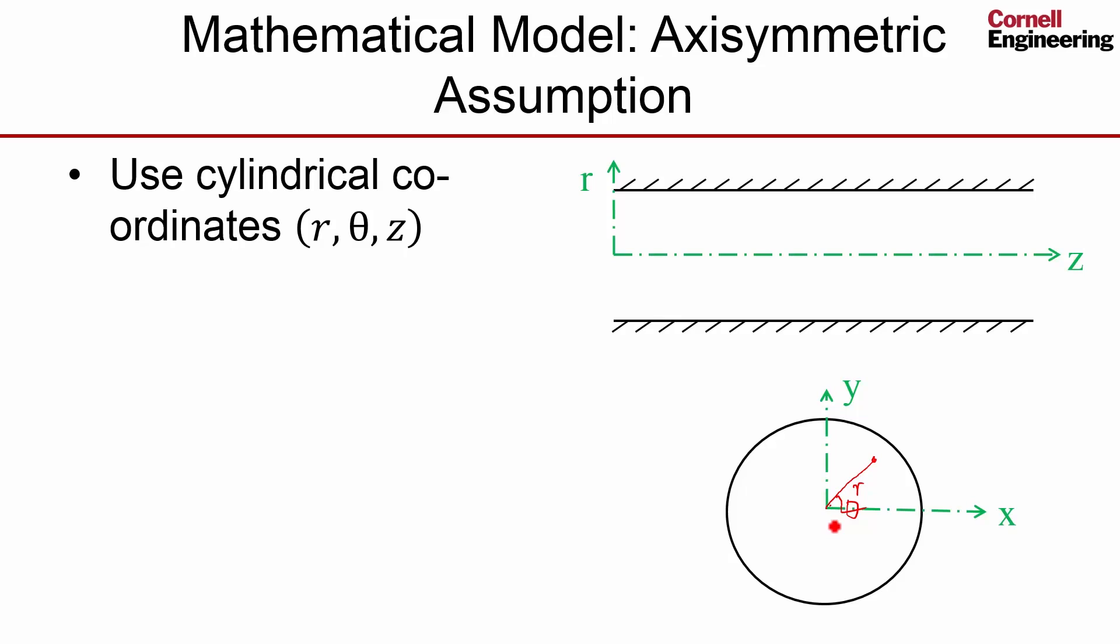So in the axisymmetric assumption, we switch to the cylindrical coordinates: radial, circumferential, and axial.